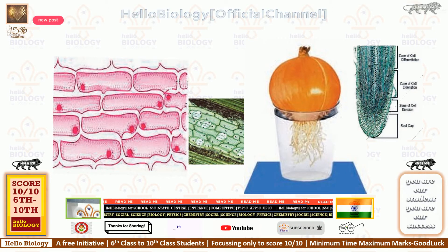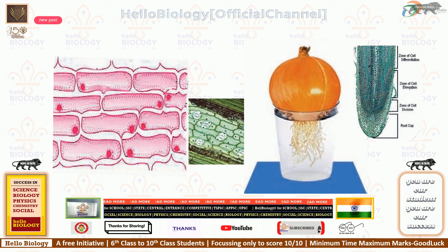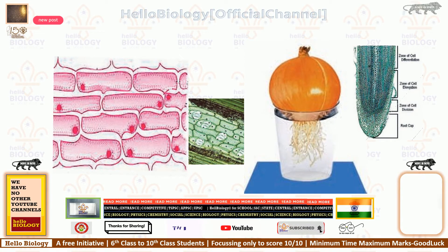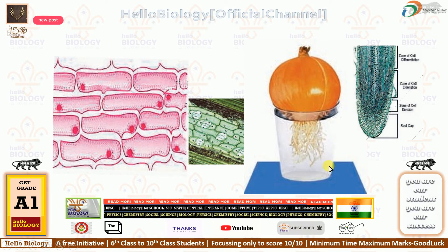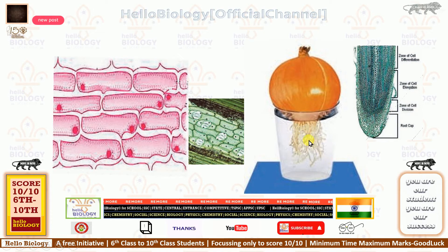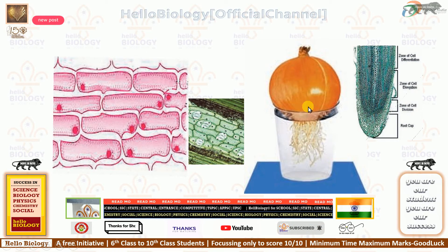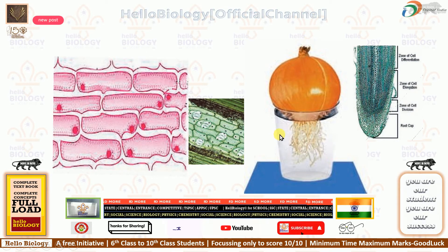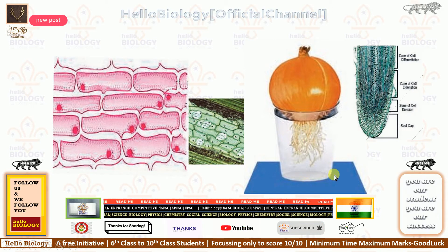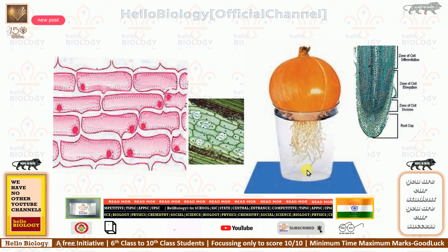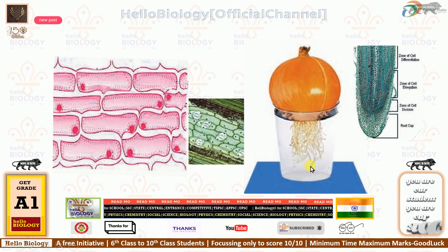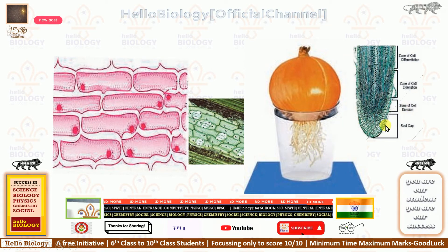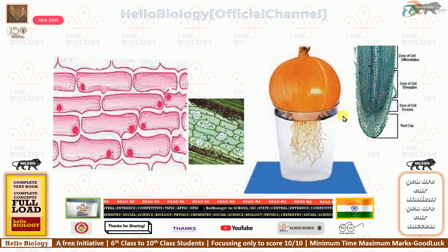You can write these four in any order: meristematic tissue, vascular tissue, ground tissue, and dermal tissue. Before that, to observe tissues, take one onion with roots touching the water level in a glass and set it up for three to four days. After that, small hair-like root structures will appear. Take the root tip and observe it under a microscope to get this kind of picture.